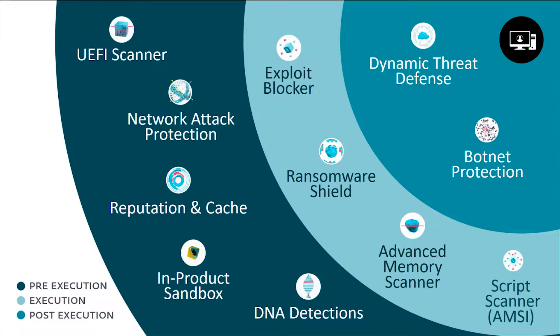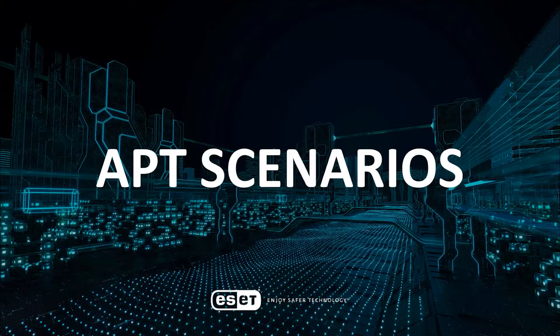Here's an overview of the various ESET detection layers capable of detecting threats either pre-execution, during execution, or post-execution. Now let's take a look at how this comes into play in an APT attack. I'll walk you through four APT attack scenarios based on real-life attacks we've analyzed. The various attacker techniques will be mapped to the MITRE ATT&CK knowledge base, along with the possible ways to detect them on multiple layers using endpoint security and EDR solutions.